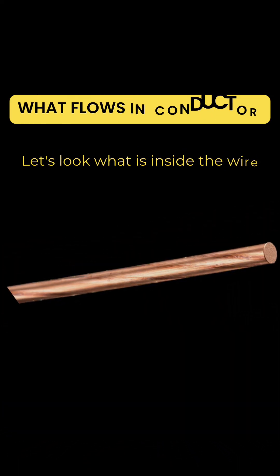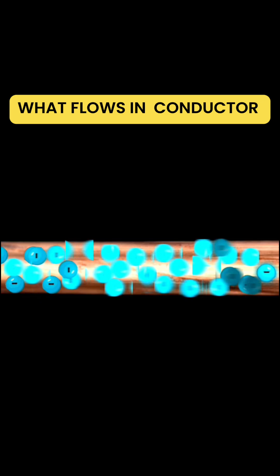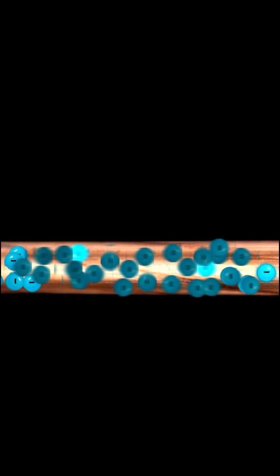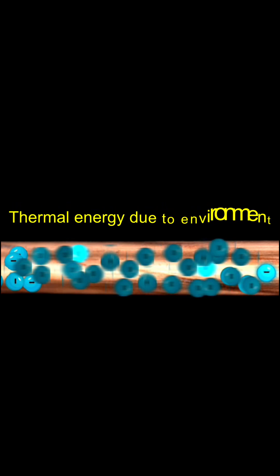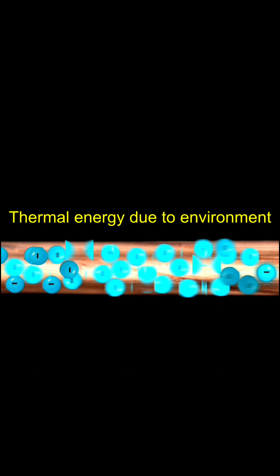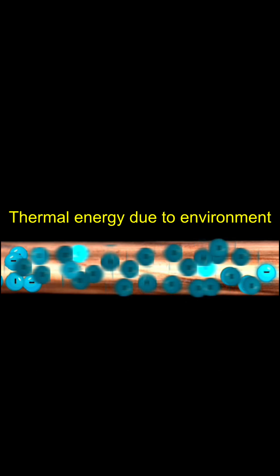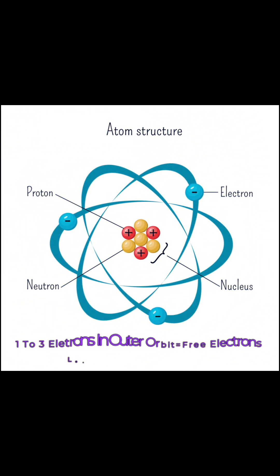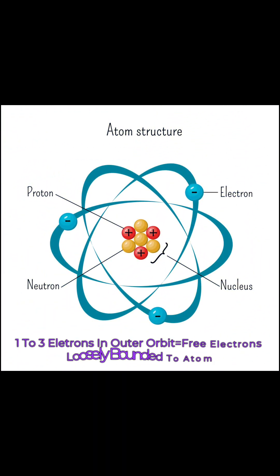This is a copper conductor, an excellent material for carrying electrical current. But what flows inside it? Let's take a closer look. Free electrons are scattered throughout the conductor even before any voltage is supplied. They move randomly in all directions due to thermal energy from the surrounding environment. Let's zoom in to see what happens at the atomic level.